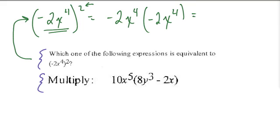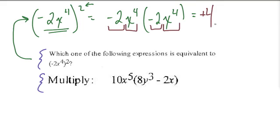So how do we do that? Well, multiplication can be worked out in any order. Here I'm going to multiply my two coefficients first: negative 2 times negative 2, which is positive 4. And then x to the fourth times x to the fourth — we'll leave that up here and evaluate it next.